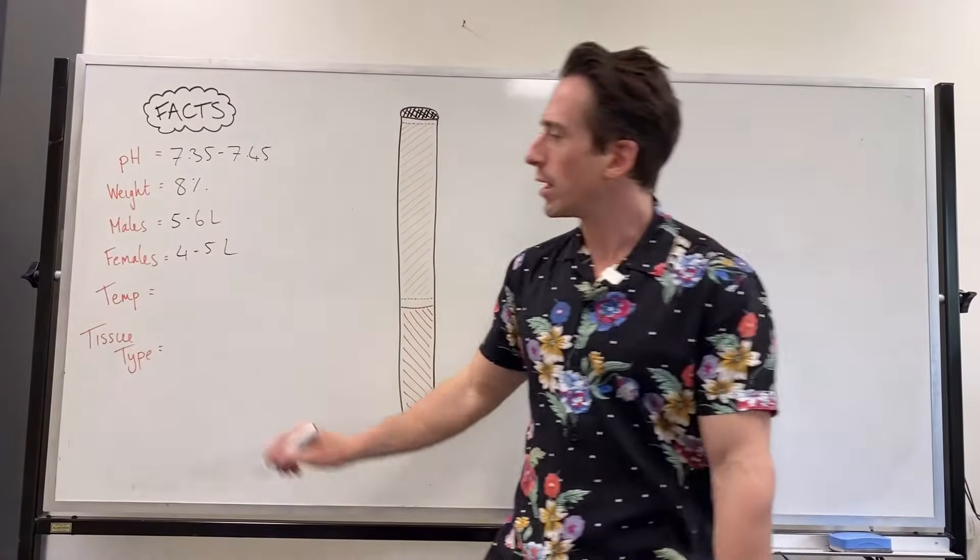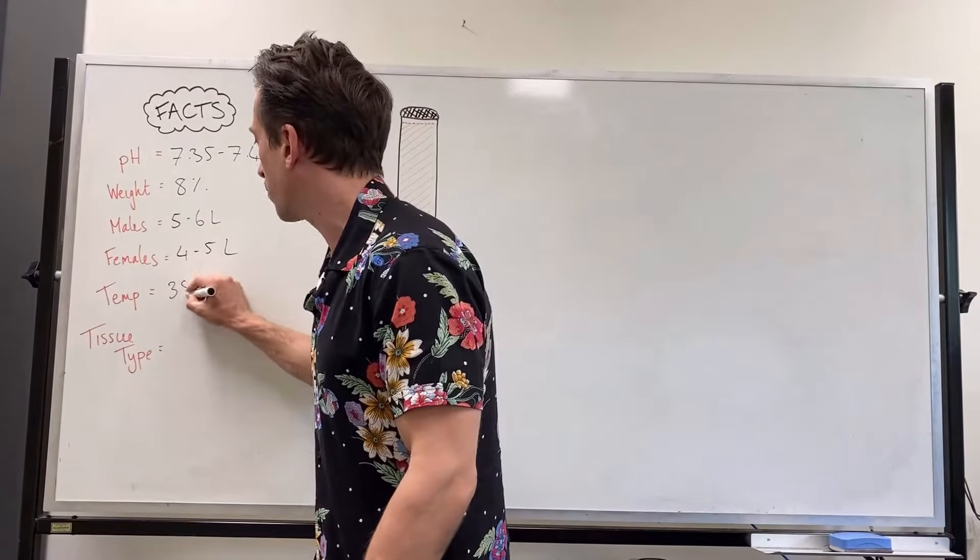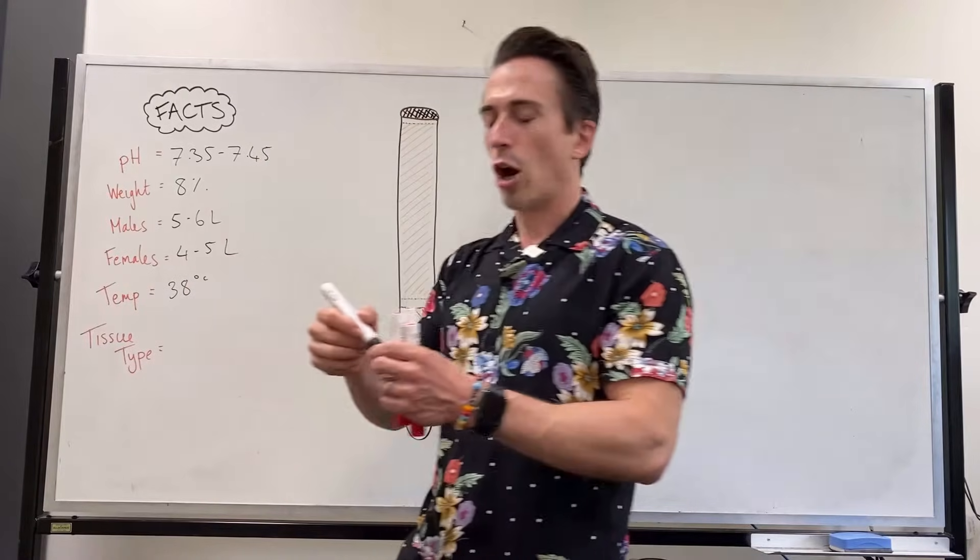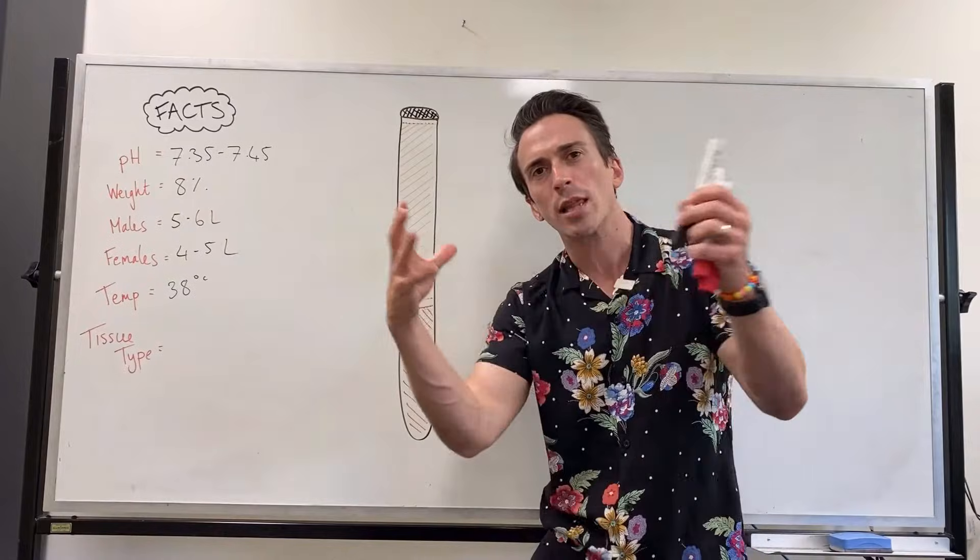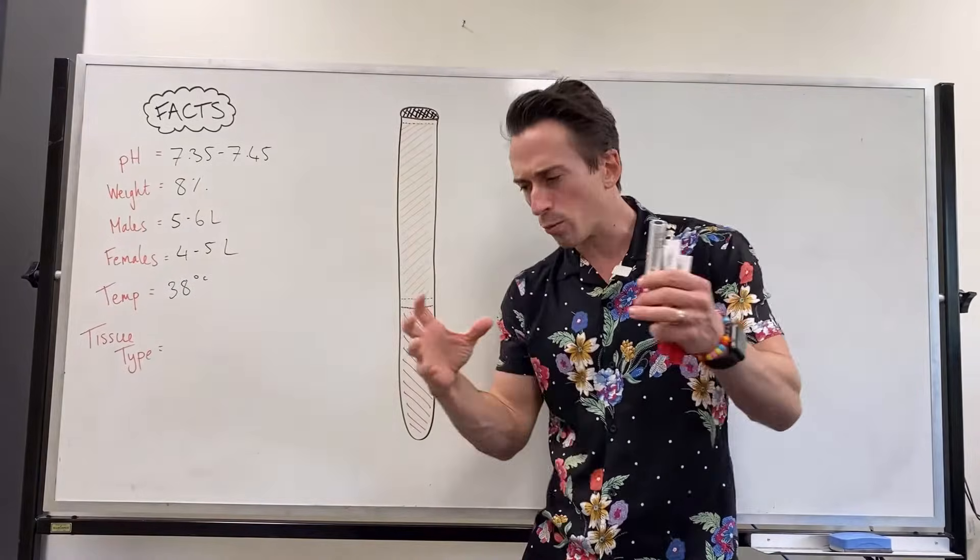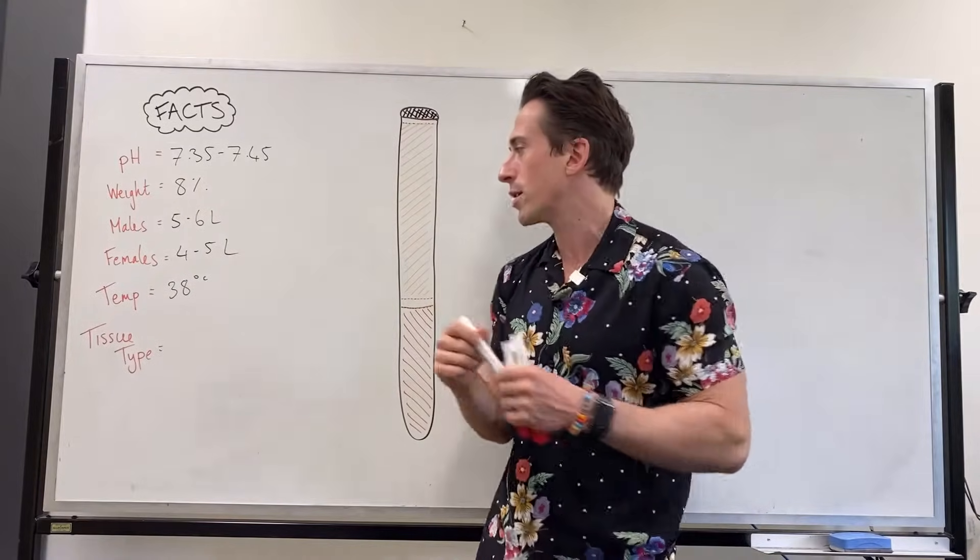And the temperature of blood in our body is about 38 degrees and blood is the primary way of shifting heat around the body. If it gets too hot, then the blood vessels dilate, we release heat. If it's too cold, blood vessels constrict, we hold on to that heat.